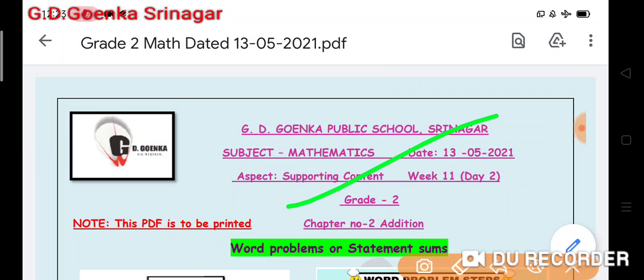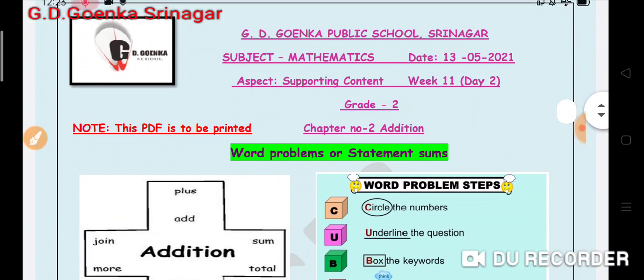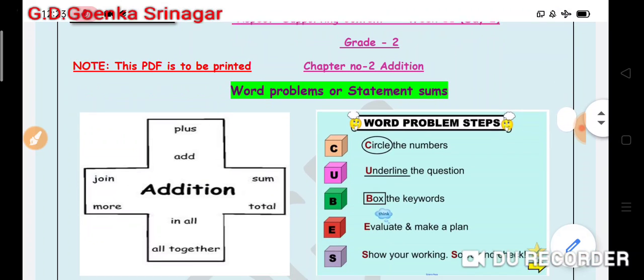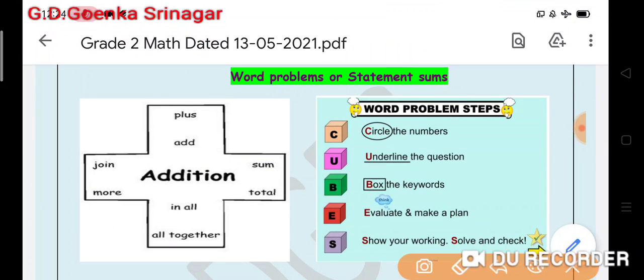My dear little Goinkans, as you know we are doing our chapter number 2 addition and our today's topic for the class is word problems or statement sums. So let us first go through the clue words of the word problems or the statement sums or we can also call them the story sums.